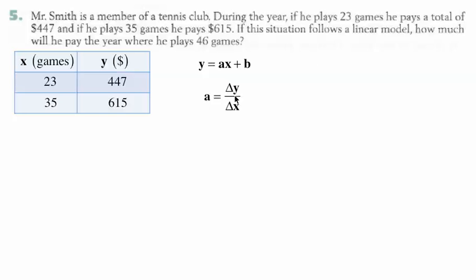Now we have to find our a. a is delta y over delta x. All right, which is going to be 615 minus 447. That's delta y. Delta x is going to be 35 take away 23, which gives us 168 divided by 12, which is 14.